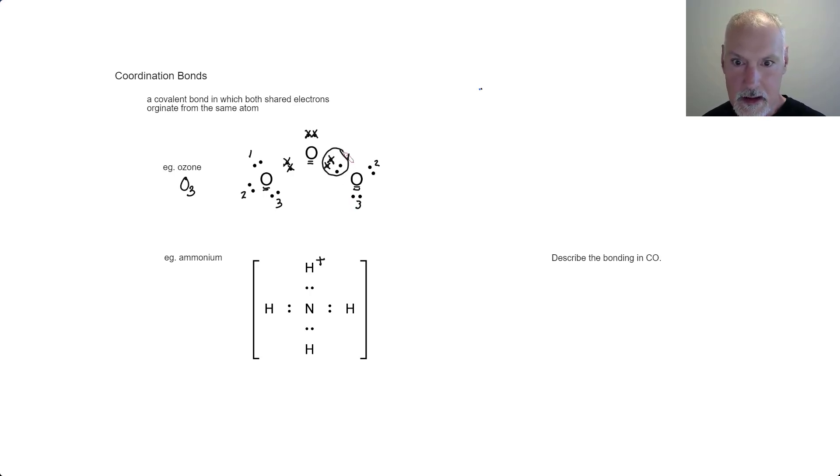So let's examine this structure for a minute. Here, I have an equal sharing of electrons occurring. What I mean by that is both atoms are contributing electrons. Over here, this pair of electrons came from the central atom.